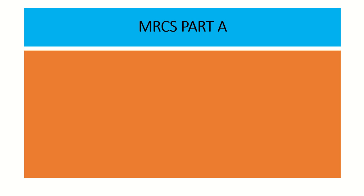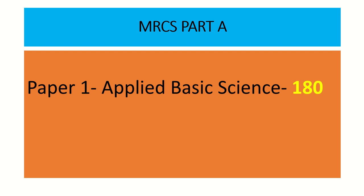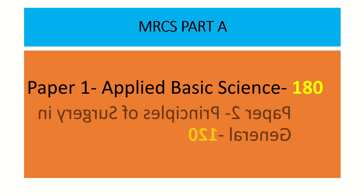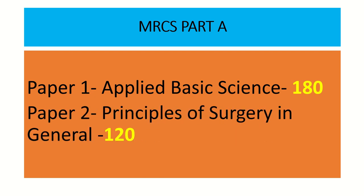MRCS Part A is divided into two parts. Paper 1 is Applied Basic Science and it carries about 180 marks. The second part, Paper 2, is the Principles of Surgery in General and is 120 marks. So these 300 marks make up MRCS Part A — Paper 1 has 180 marks and Paper 2 has 120 marks, totalling 300 marks.